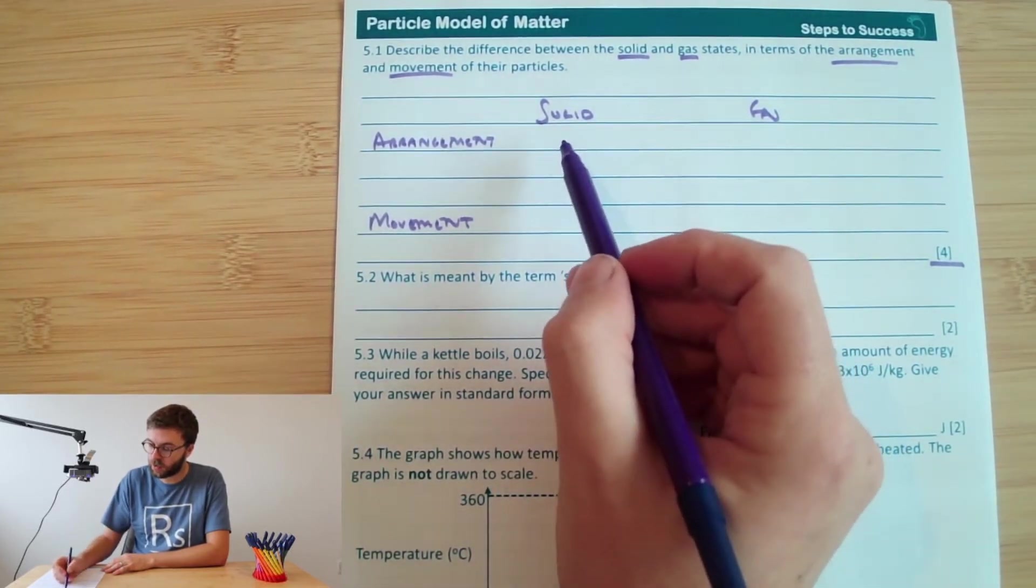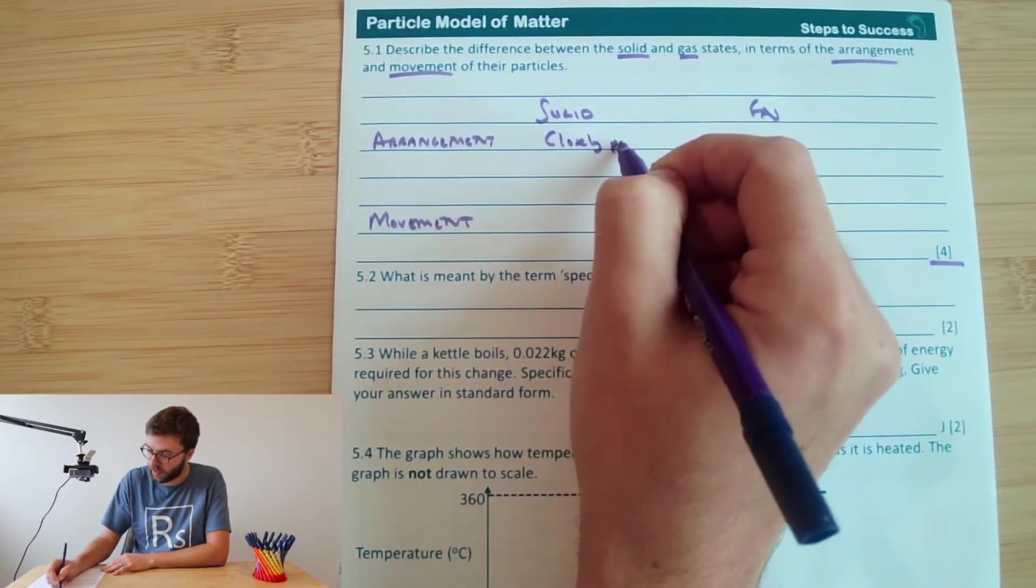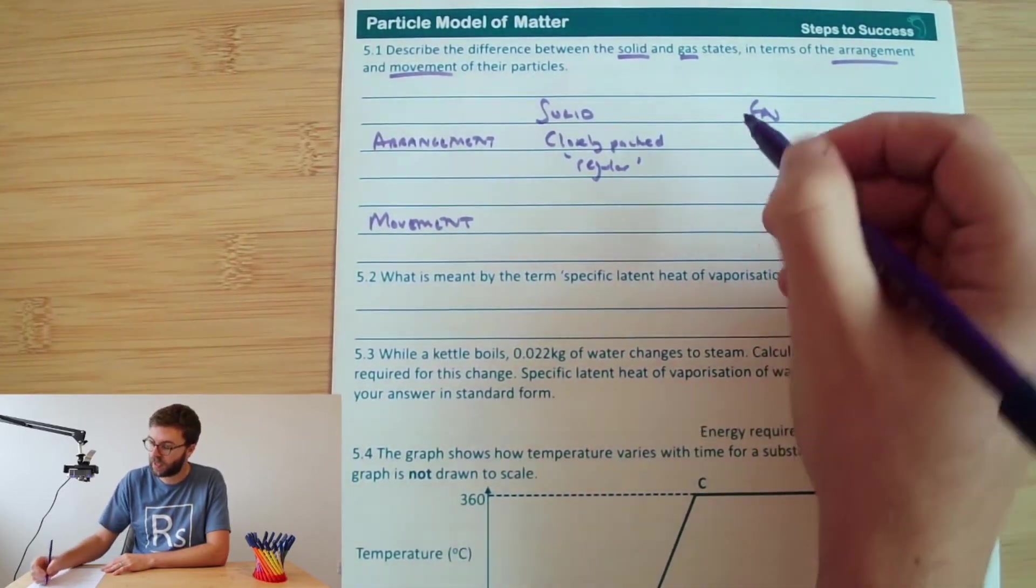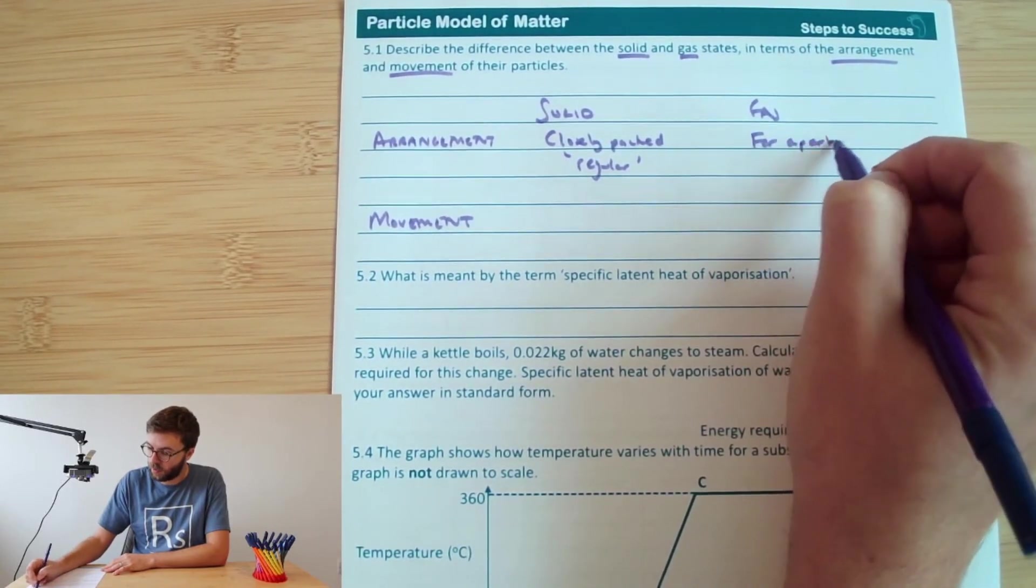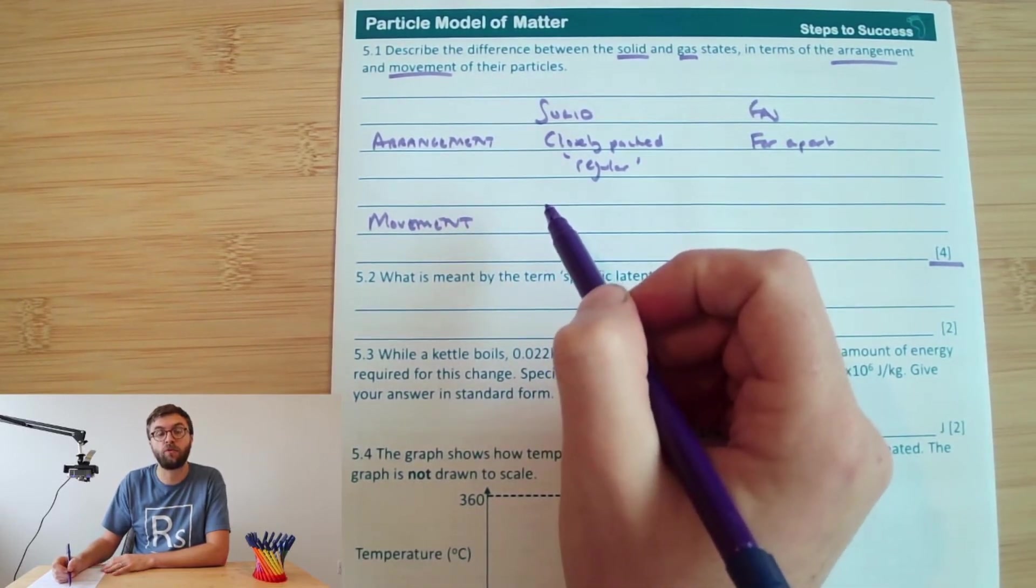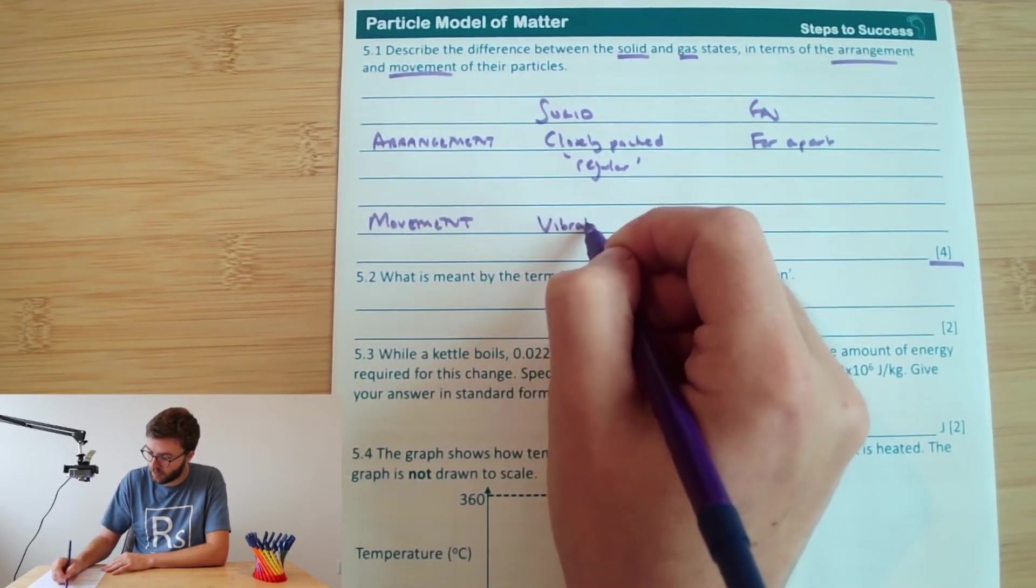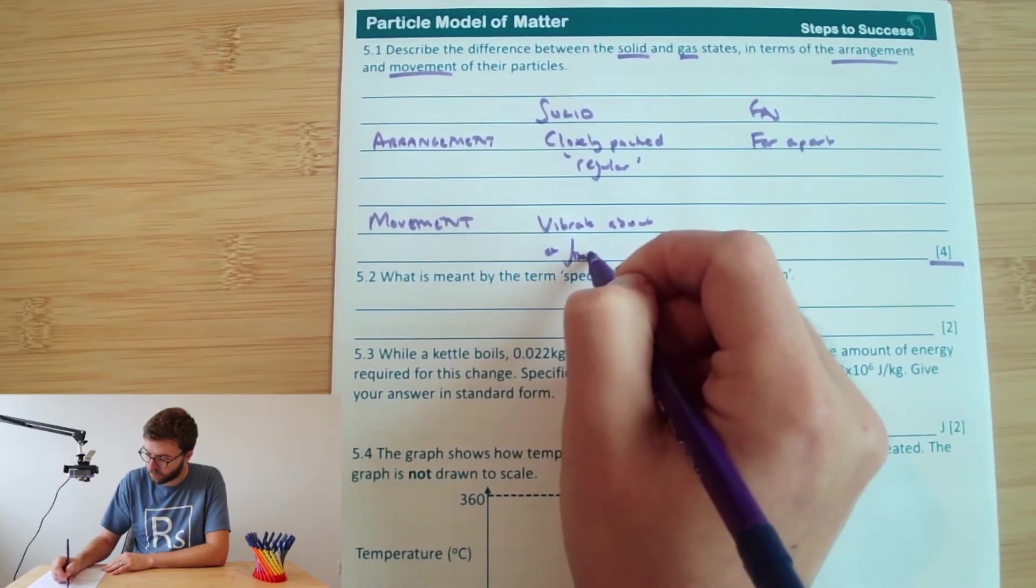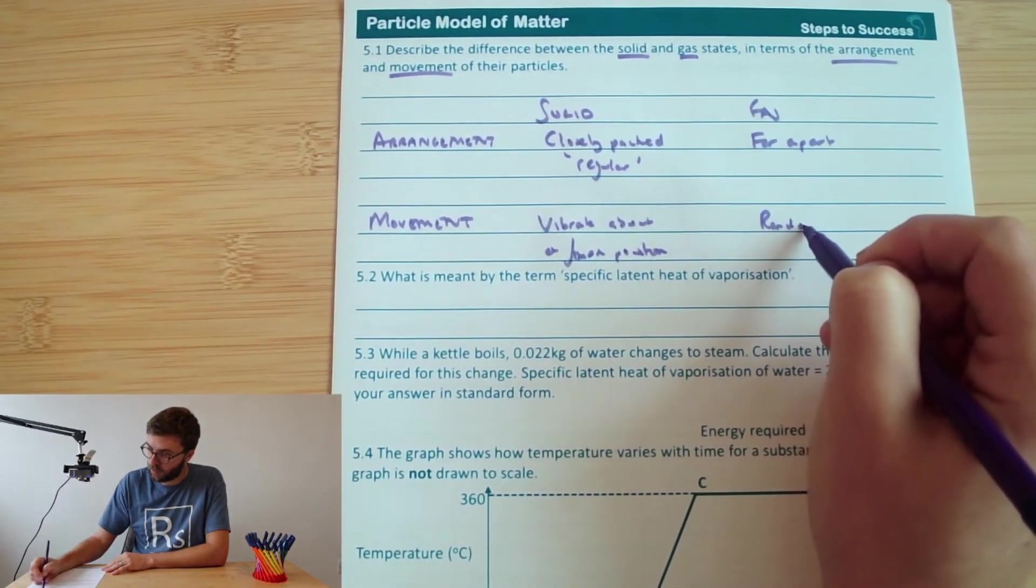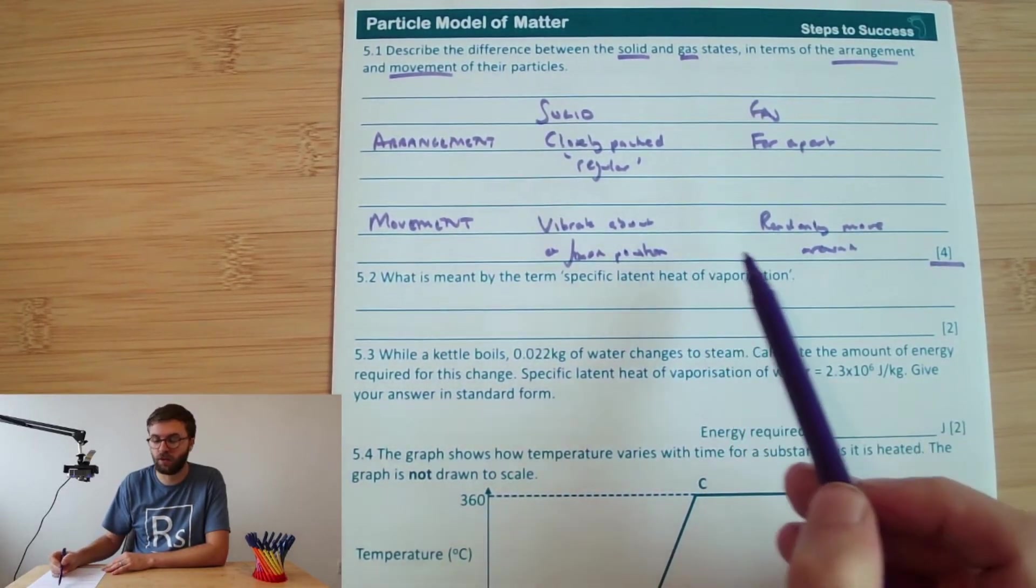So let's think about the solid particles and the arrangement of the solid particles. In a solid, the particles are closely packed together in a regular arrangement, whereas in the gas, they're far apart with gaps between the particles. When we think about a movement of the solid, now again, it's really important to remember that solid particles, the particles in a solid do move, so they usually vibrate about a fixed position. And then finally, for a gas, where they randomly move around. And you can see that we're picking up on one, two, three, four marks.